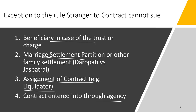The exceptions where a stranger to contract can sue are: Number one, a beneficiary in the case of a trust or charge. If a trust is created and somebody is the beneficiary getting benefit from it, there is no direct contract between the beneficiary and the other person, but the beneficiary can sue because they are receiving a benefit.